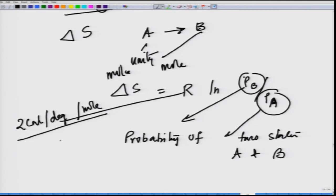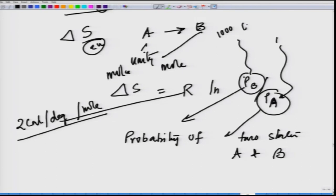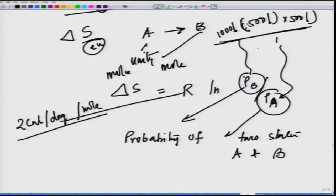Delta S is the measure of entropy in entropy units (EU). For the 1000 coins example, the relative probability of the all-heads state A versus the half-heads/half-tails state B is the ratio of different ways the two results can be obtained. One can calculate that P_A equals 1 and P_B equals 1000-choose-500, which is 10 to the power 298.